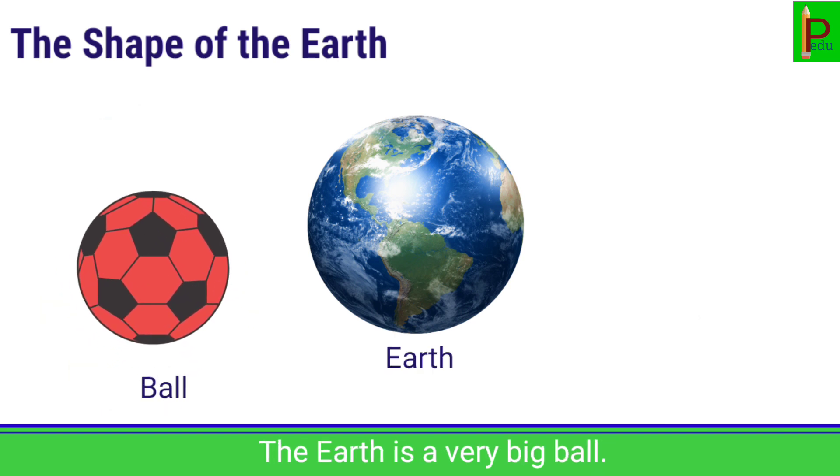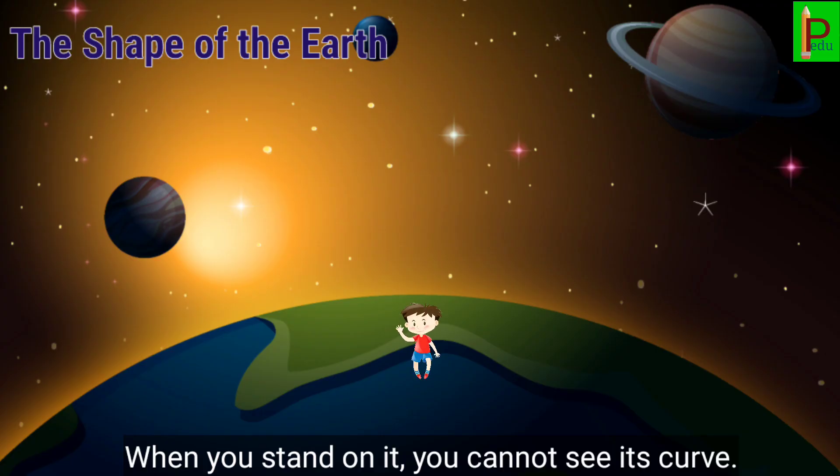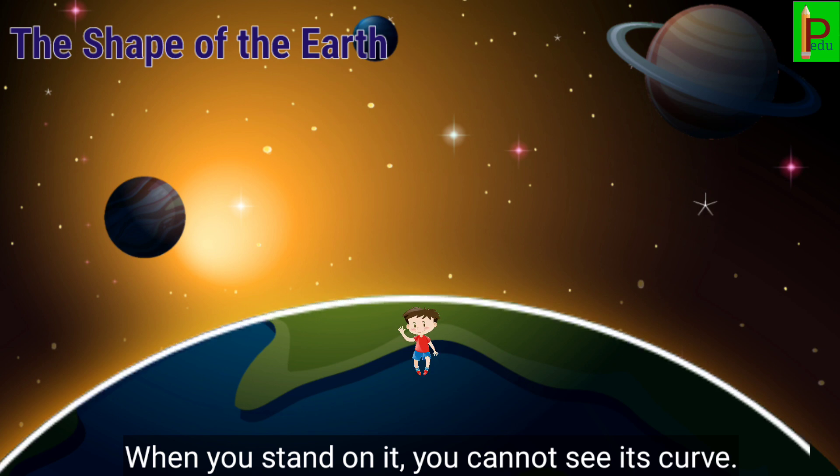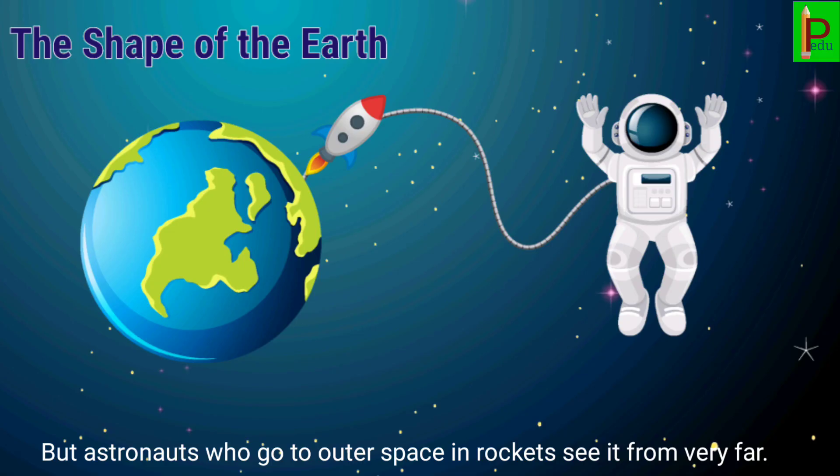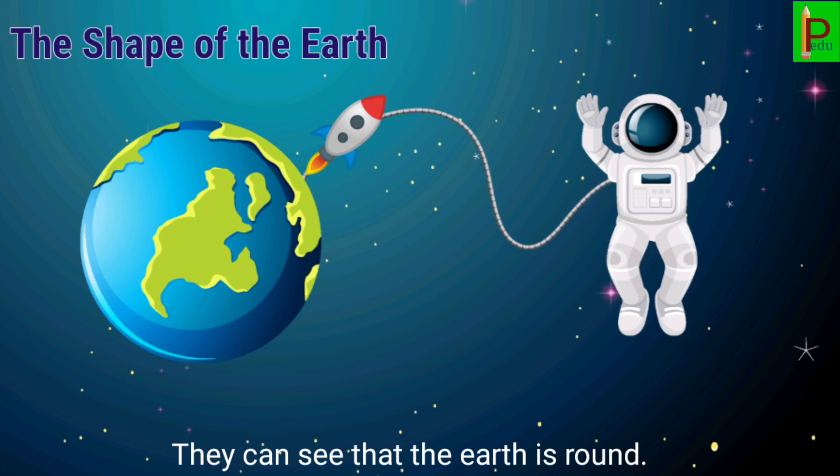The earth is a very big ball. When you stand on it, you cannot see its curve. But astronauts who go to outer space in rockets see it from very far. They can clearly see that the earth is round.